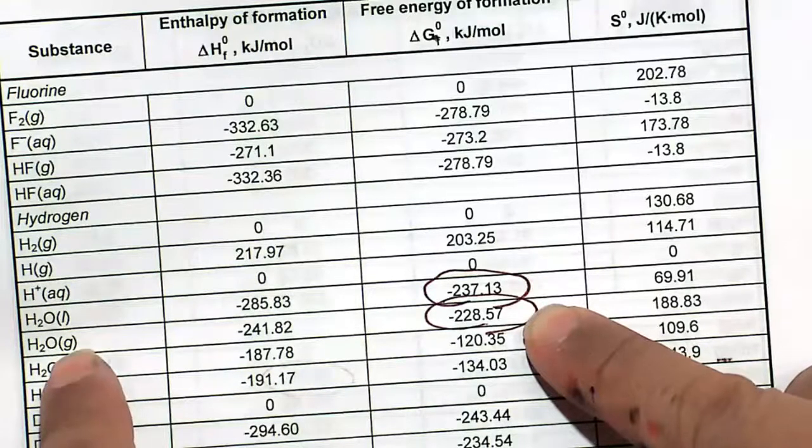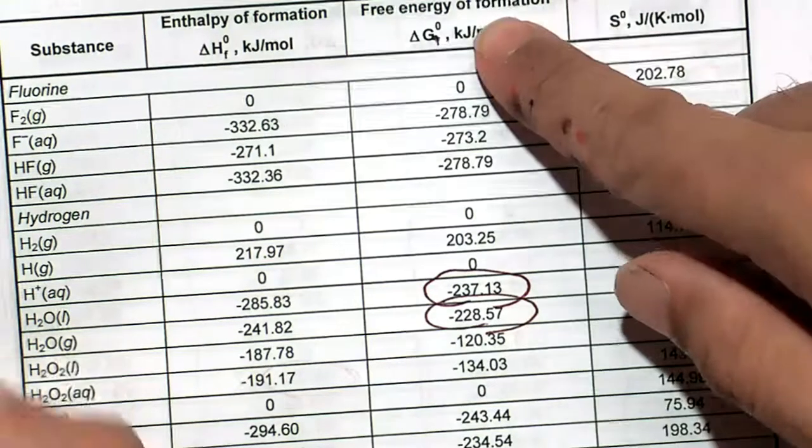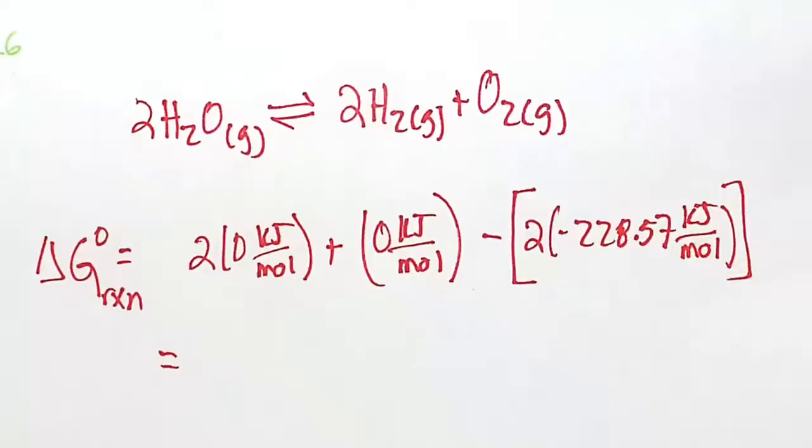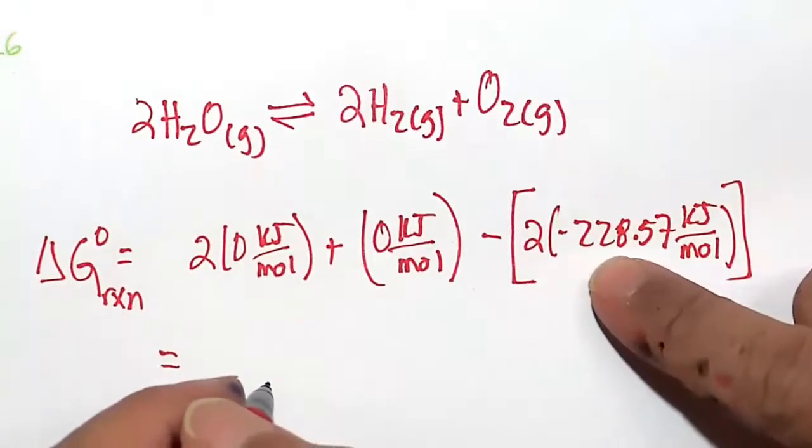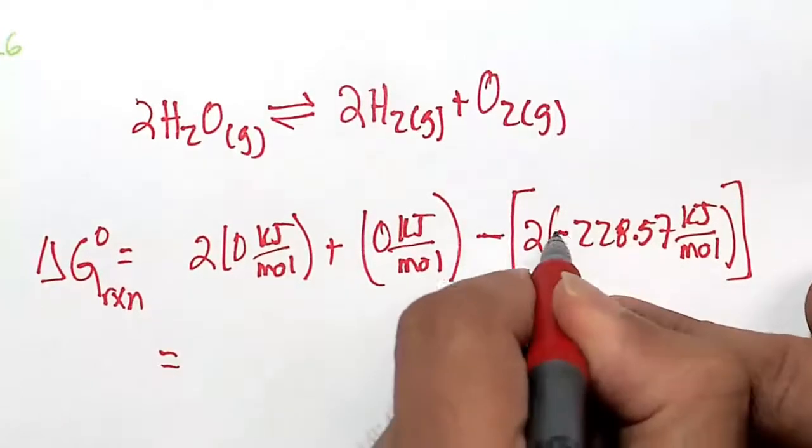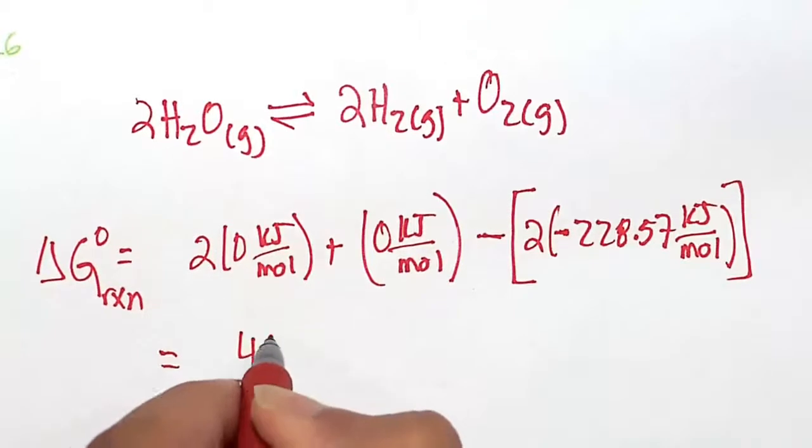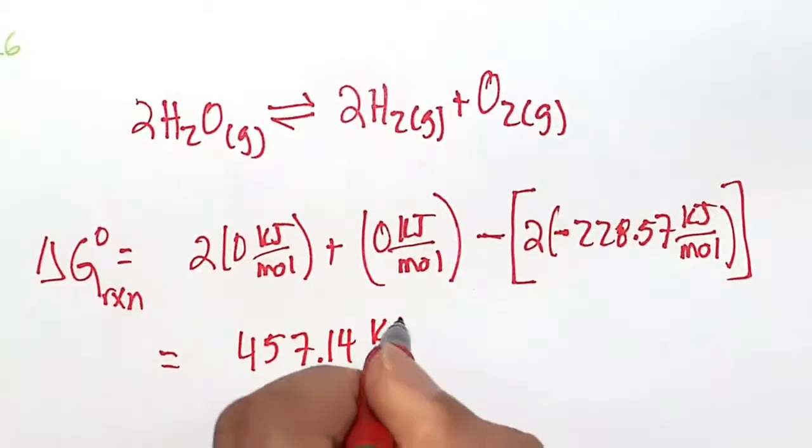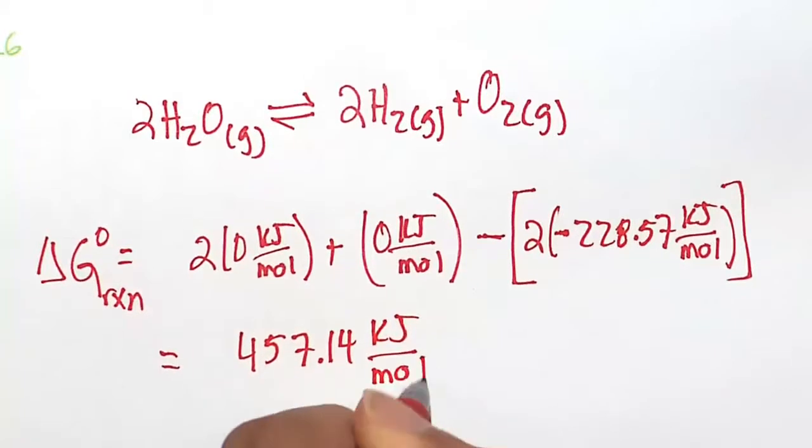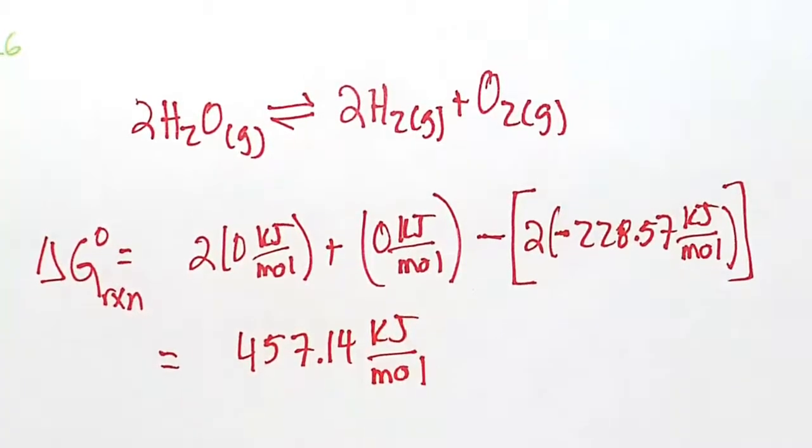Yes, that's it, two times this, two times minus 228.57. Doing this on my calculator, I'm getting an answer of two times 228.57. By the way, the minus and a minus becomes a plus, so it's going to be positive 457.14 kilojoules per mole. So that will be our delta G for this reaction.